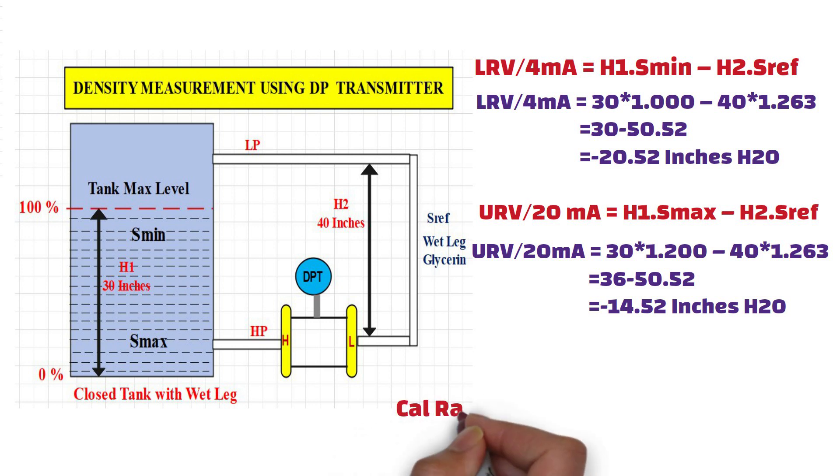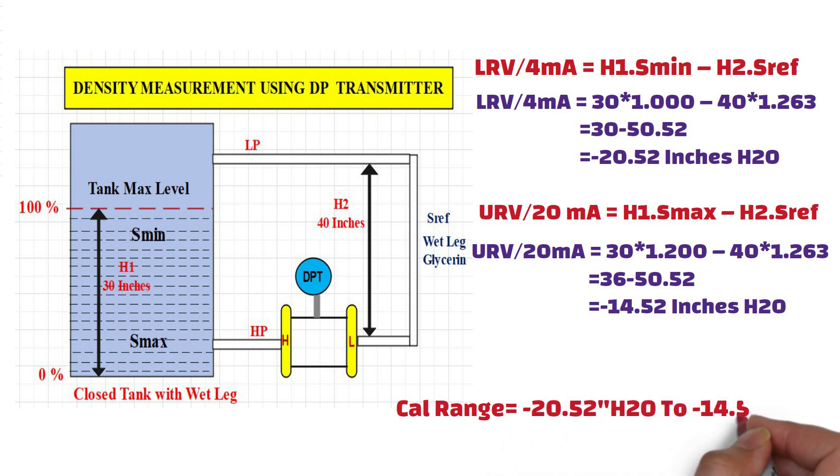So, DP transmitter's calibration range is minus 20.52 inches H2O to minus 14.52 inches H2O in this example. As I mentioned earlier in this video, these equations are valid only for constant level application.